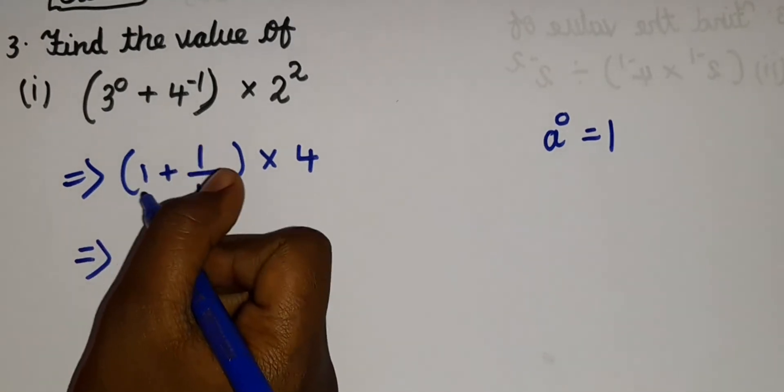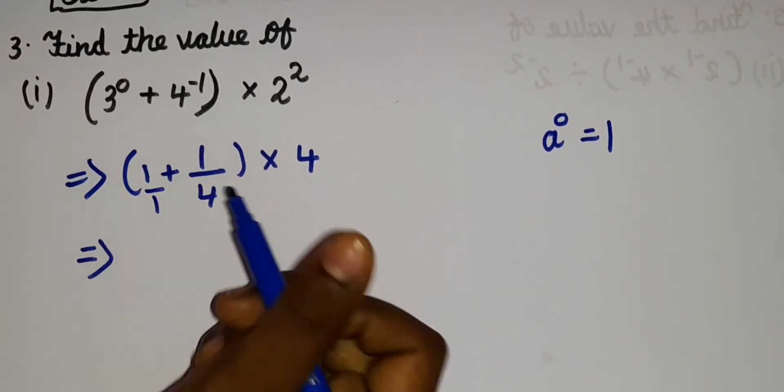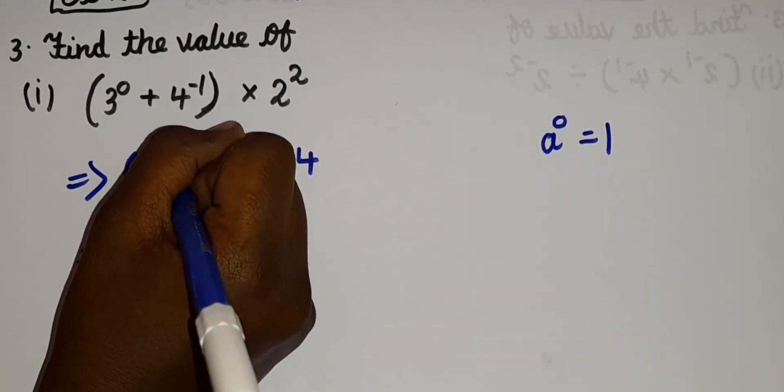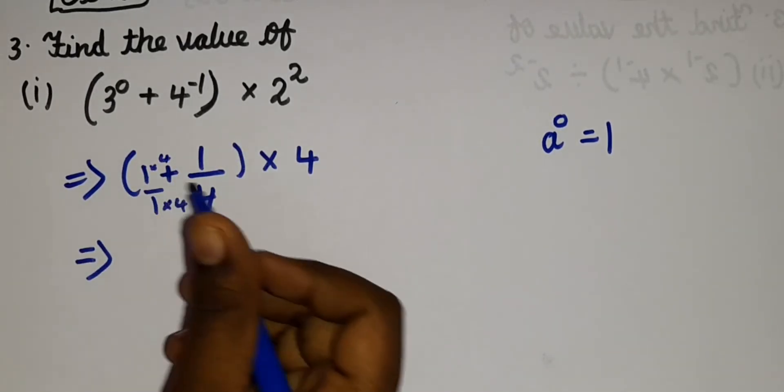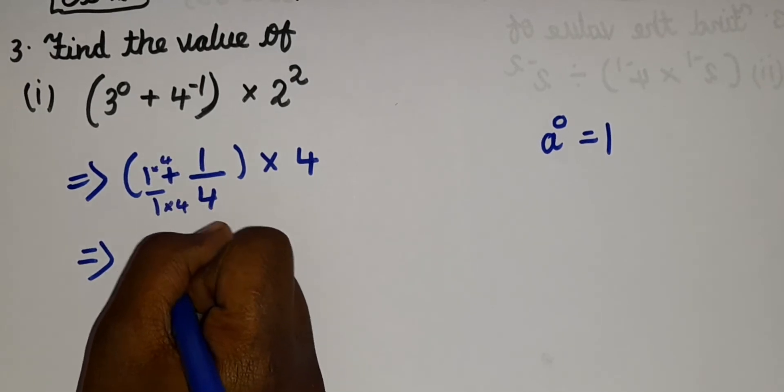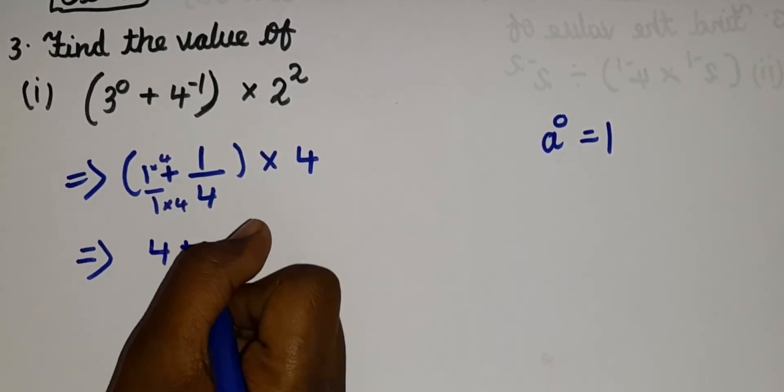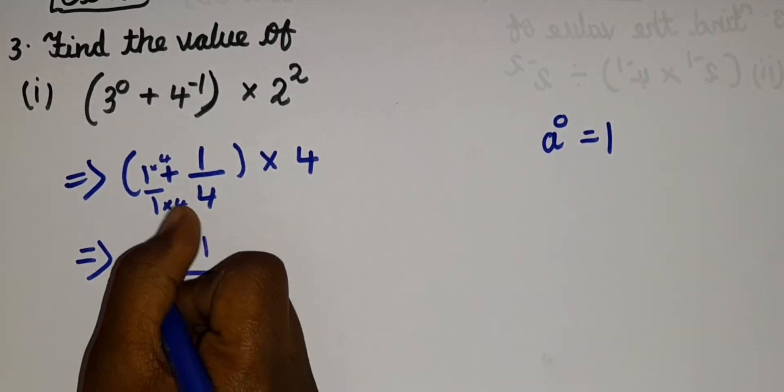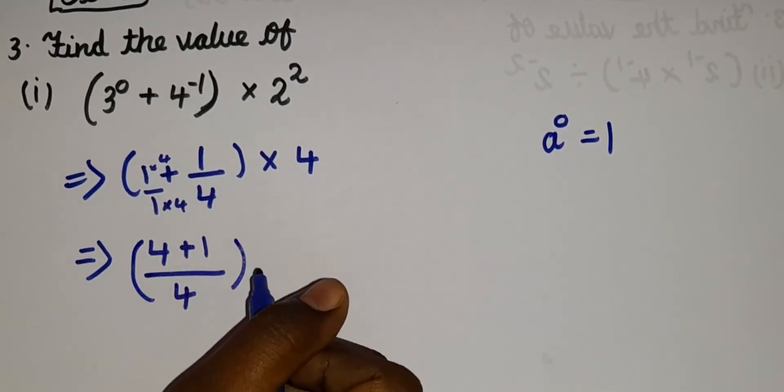So when we change it, so this is 1/1, right? So 1 × 4 and 1 × 4. So our base is 4 + 1/4. I hope you can understand this step, how I took the LCM and the numerator I multiplied with 4. So 1 × 4 is 4. So 4 + 1, that's how I got the 4 + 1.